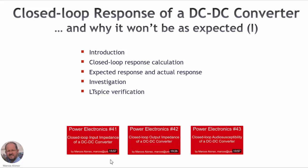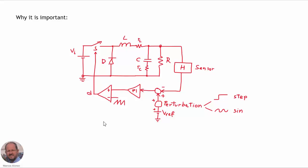This is another video in this series. We have previously seen three other videos related to characteristics of DC-DC converters in closed-loop: how to obtain the input impedance, how to obtain the output impedance, and how to obtain the audio susceptibility of a DC-DC converter. If you find these videos interesting, please consider subscribing to this channel. So let's start explaining why it is important to know the closed-loop response of a DC-DC converter.